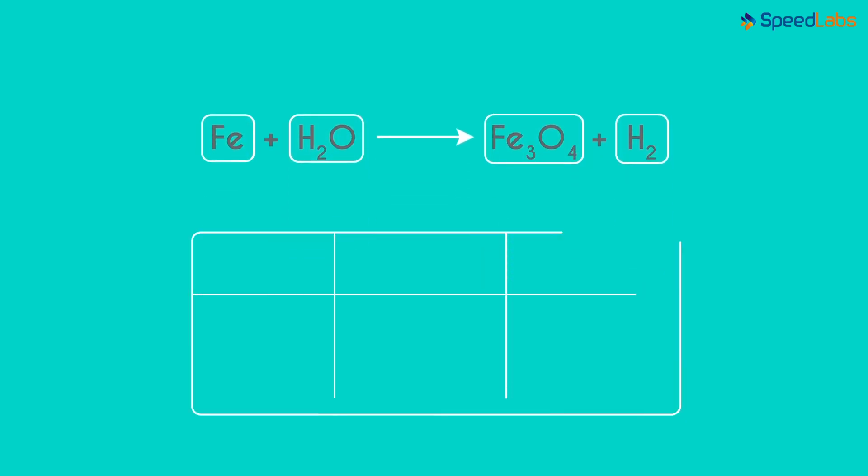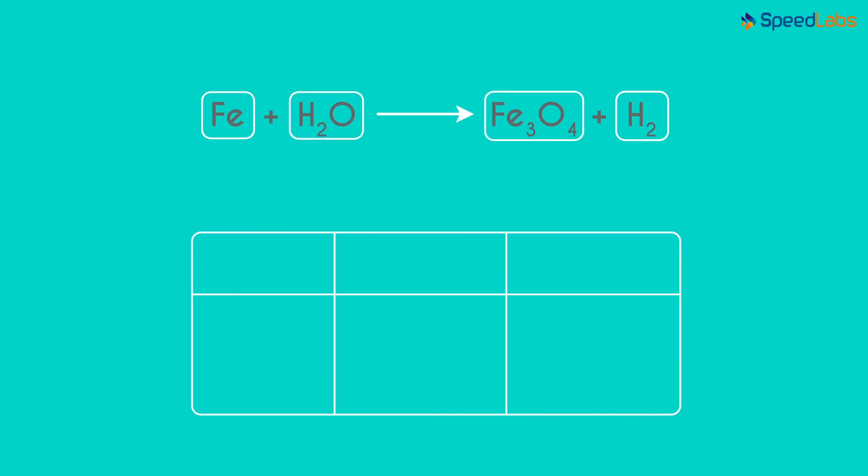Next, we populate this table. In the first column, we write down the different elements involved in the reaction. And then in these two columns, we write the number of atoms each element has on each side of the equation.